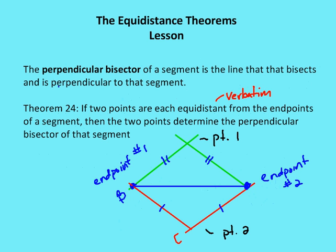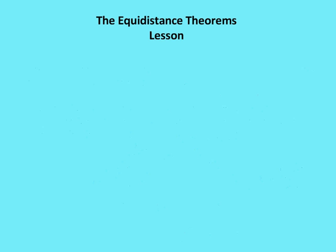So where does that leave us? Well, let's talk first about perpendicular bisectors. The perpendicular bisector of a segment is the line that bisects and is perpendicular to that segment. So I'm going to use my trusted pen here, perpendicular bisector.